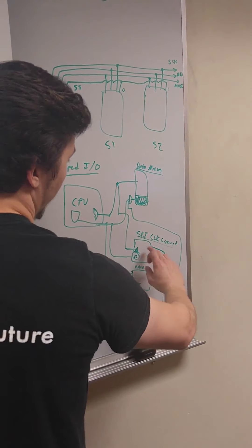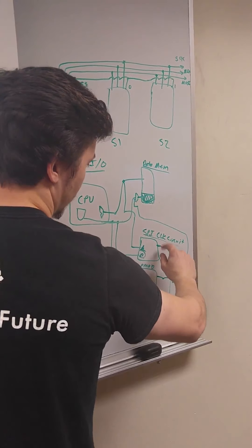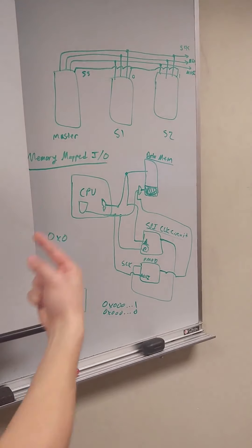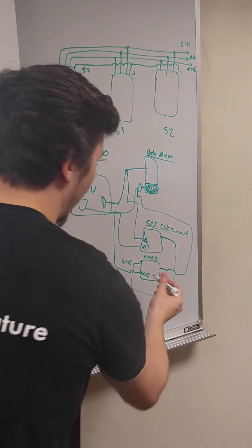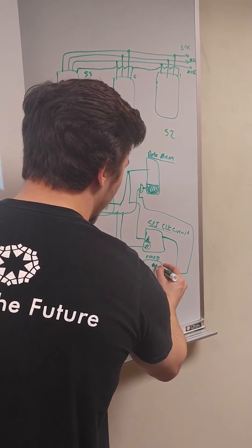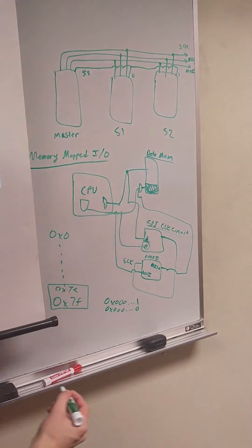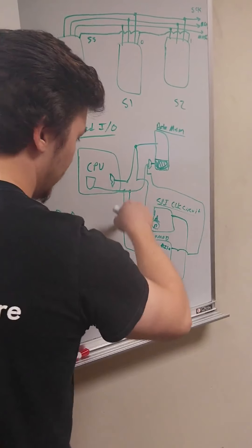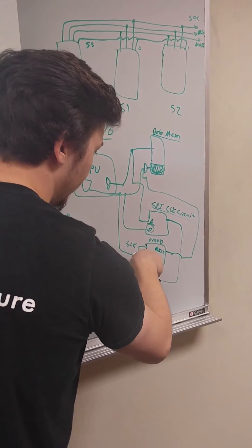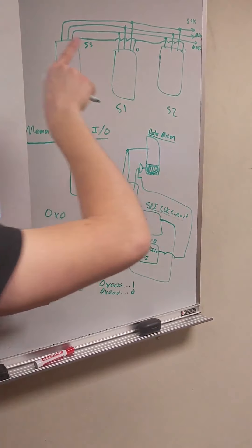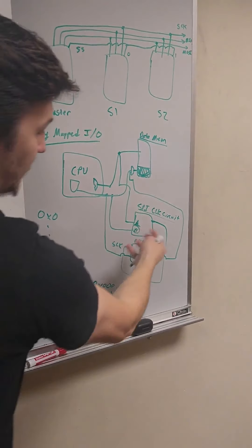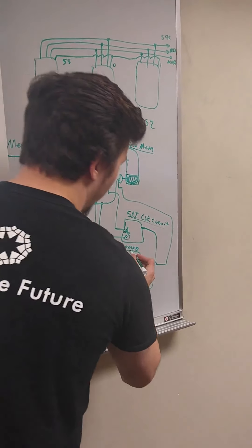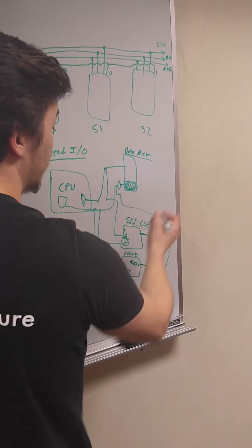In RISC-V, you would say 'store word' at a specific address with a specific value. Instead of storing it in data memory, it gets stored in the peripheral circuit. So if it's a 'start clock' instruction, the store word operation is going to start the clock, which will then start pulsing and be fed into PMOD. When you push data in, you'll also get data out on the MISO line.